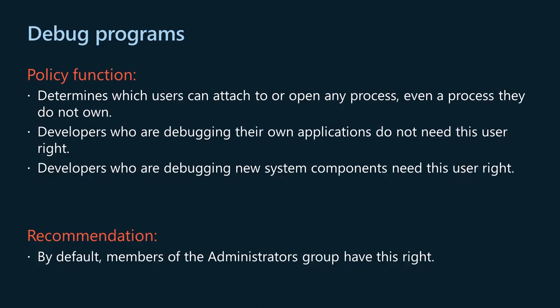The debug programs policy setting determines which users can attach to or open any process, even a process they do not own. Developers debugging their own applications do not need this user right; developers debugging new system components do. This user right provides access to sensitive and critical operating system components. Assign this user right only to trusted users to reduce security vulnerabilities. By default, members of the administrators group have this right.